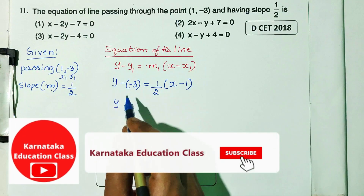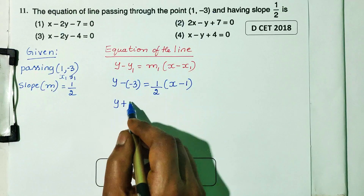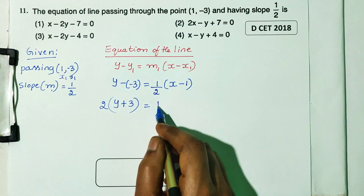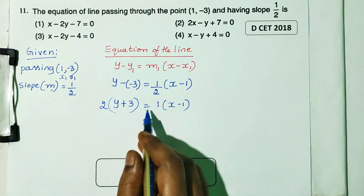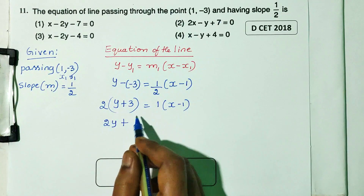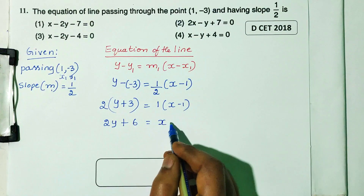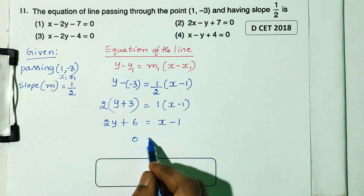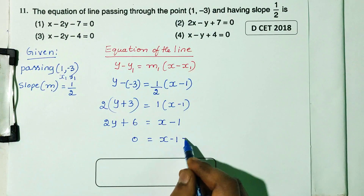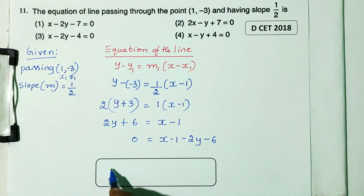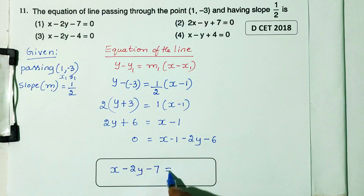Substituting and simplifying: multiply both sides by 2, giving 2y plus 6 equals x minus 1. Rearranging: x minus 2y minus 1 minus 6, that is x minus 2y minus 7 equals 0.